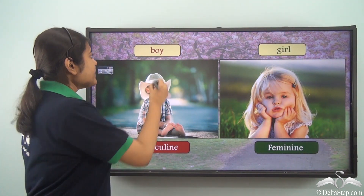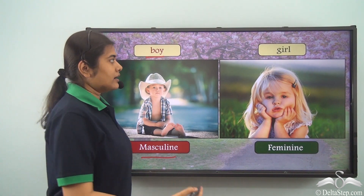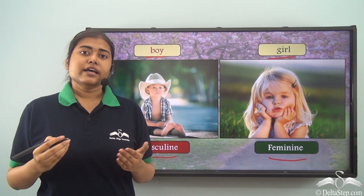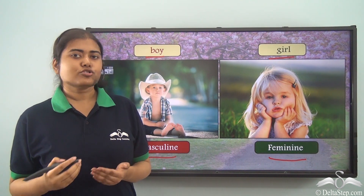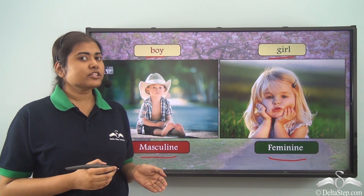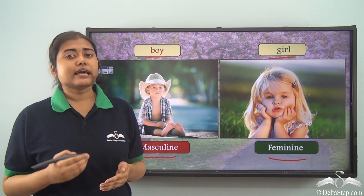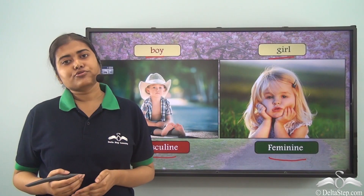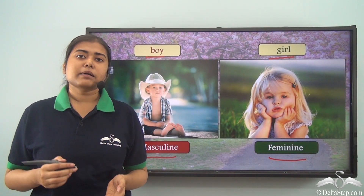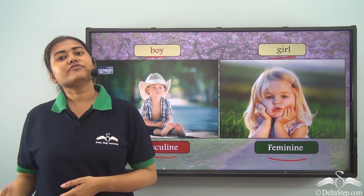In the same way, 'boy' refers to a male and hence belongs to masculine gender. 'Girl' is a female and hence refers to the feminine gender. Ravi is a boy, so Ravi belongs to the masculine gender. Ravi and his father both belong to the masculine gender whereas his sister and his mother belong to the feminine gender. Words like father, son, and brother are all used to refer to males and belong to the masculine gender, whereas words like mother, daughter, and sister are used to refer to females and belong to the feminine gender.